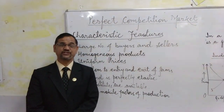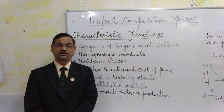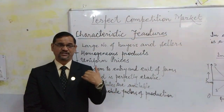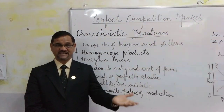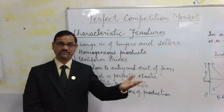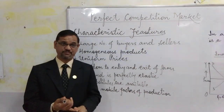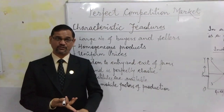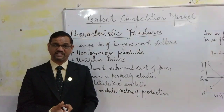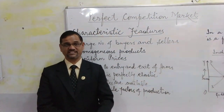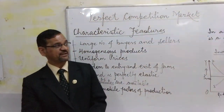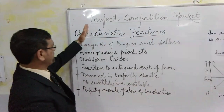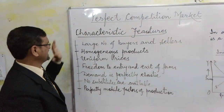Yesterday I told you about markets on the basis of competition. We talked about 5 kinds of markets: monopoly, monopolistic competition market, oligopoly, duopoly, and perfect competition market. But today I am covering the perfect competition market in detail.